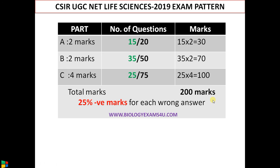We've already discussed the cut-off marks for CSIR NET life sciences in 2018 — you can refer to that video. Just 50 to 60 percent marks is required for qualifying this exam. The most important point I want to stress is the 25 percent negative marking for each wrong answer. Bear this in mind while answering questions.